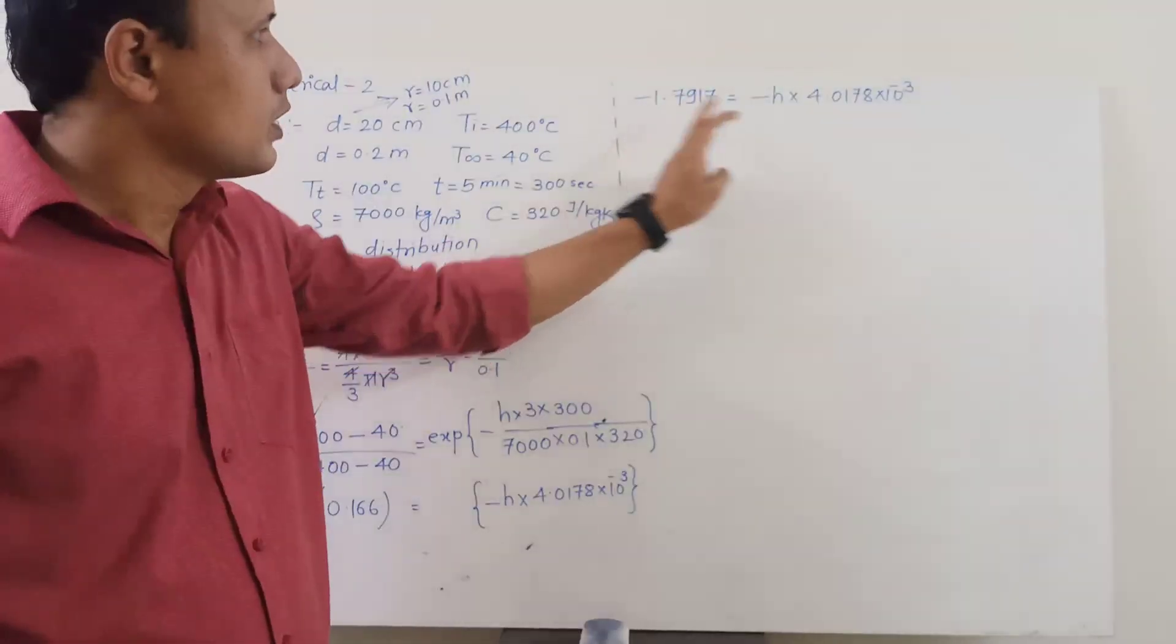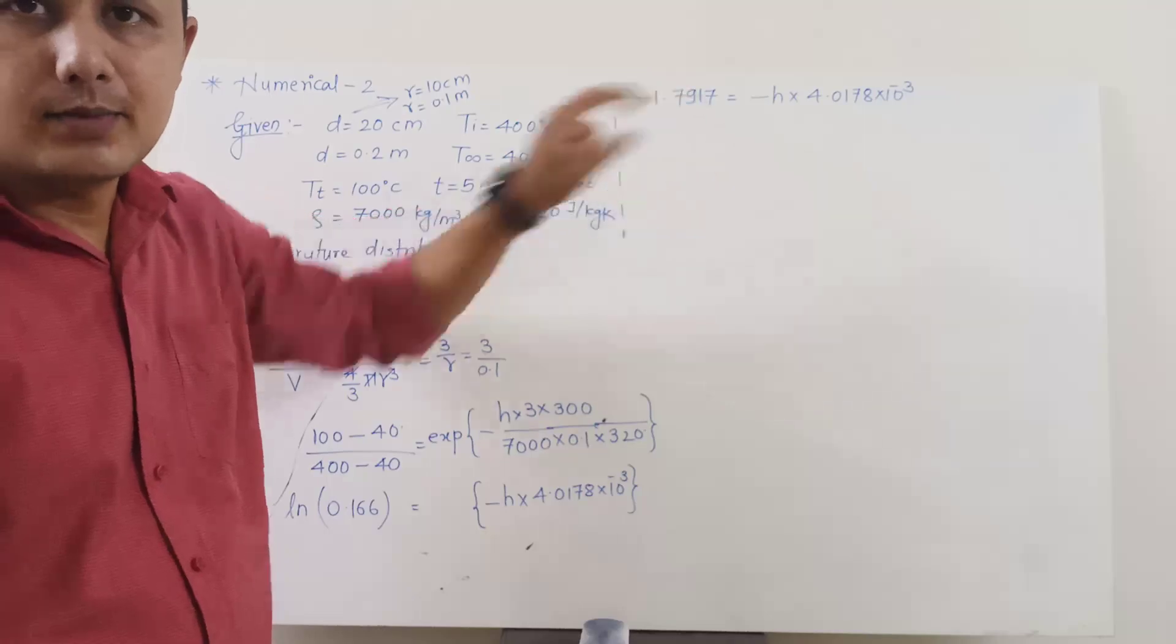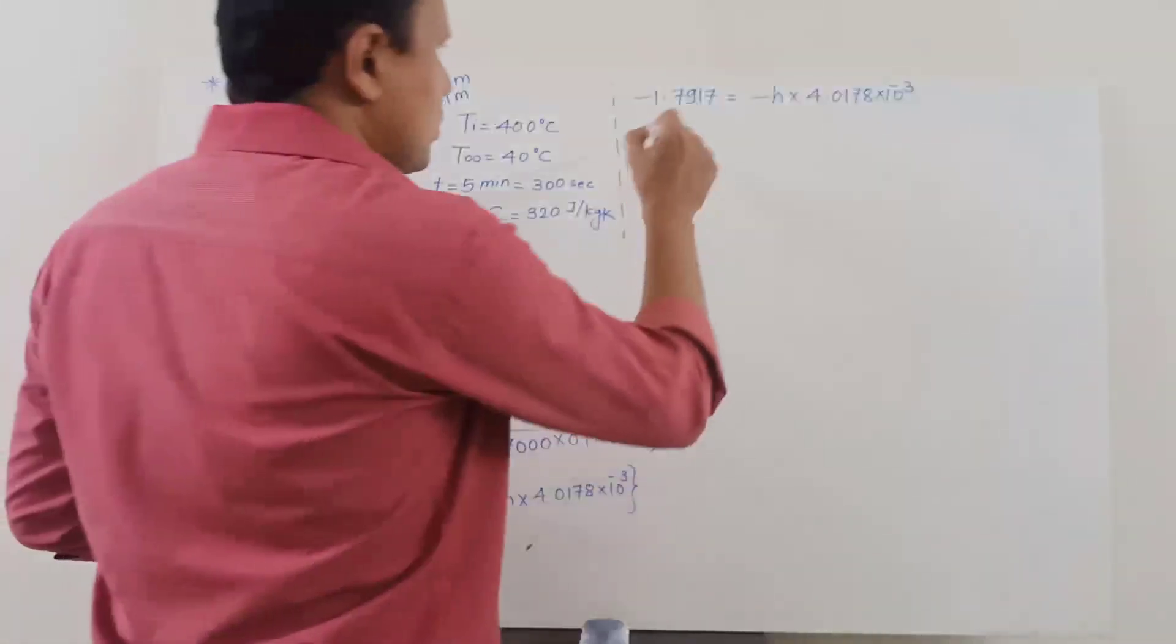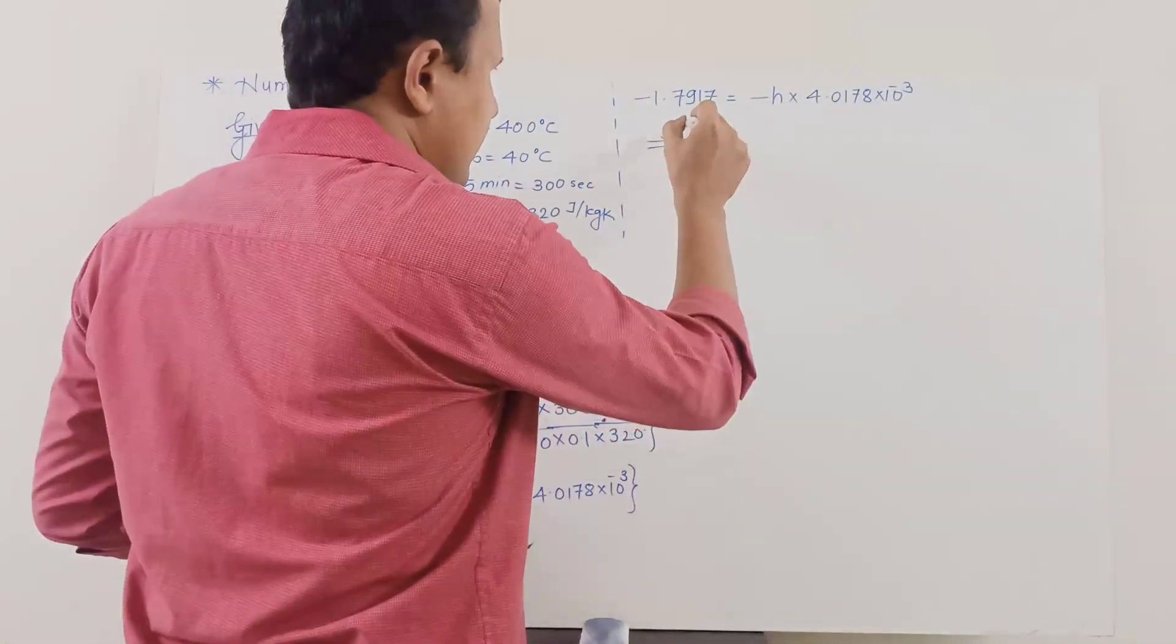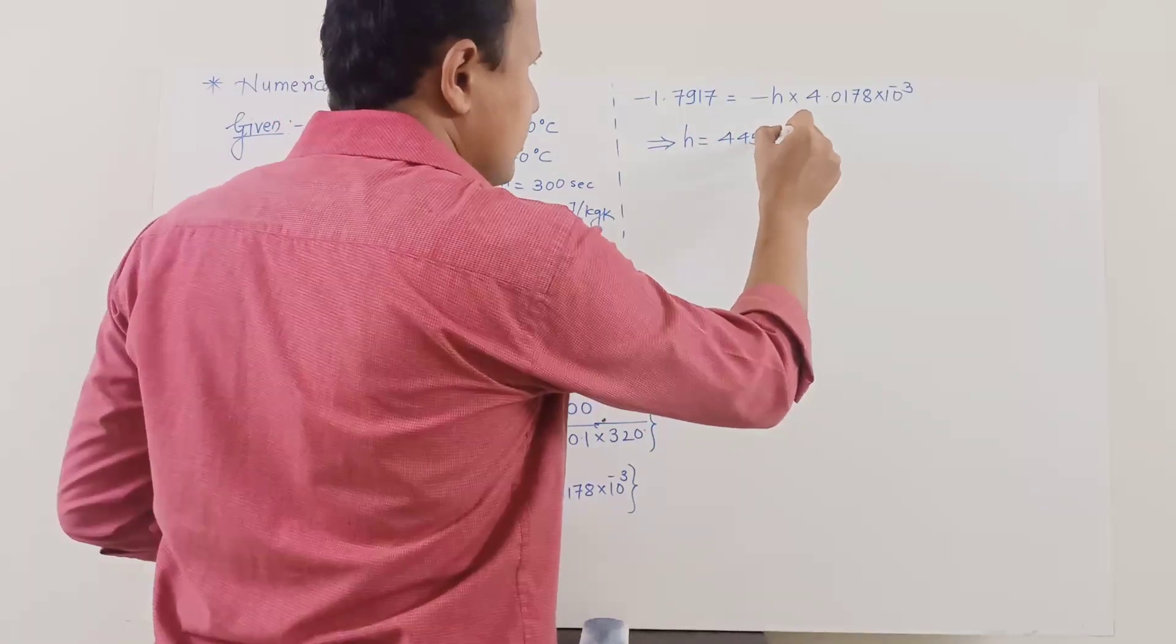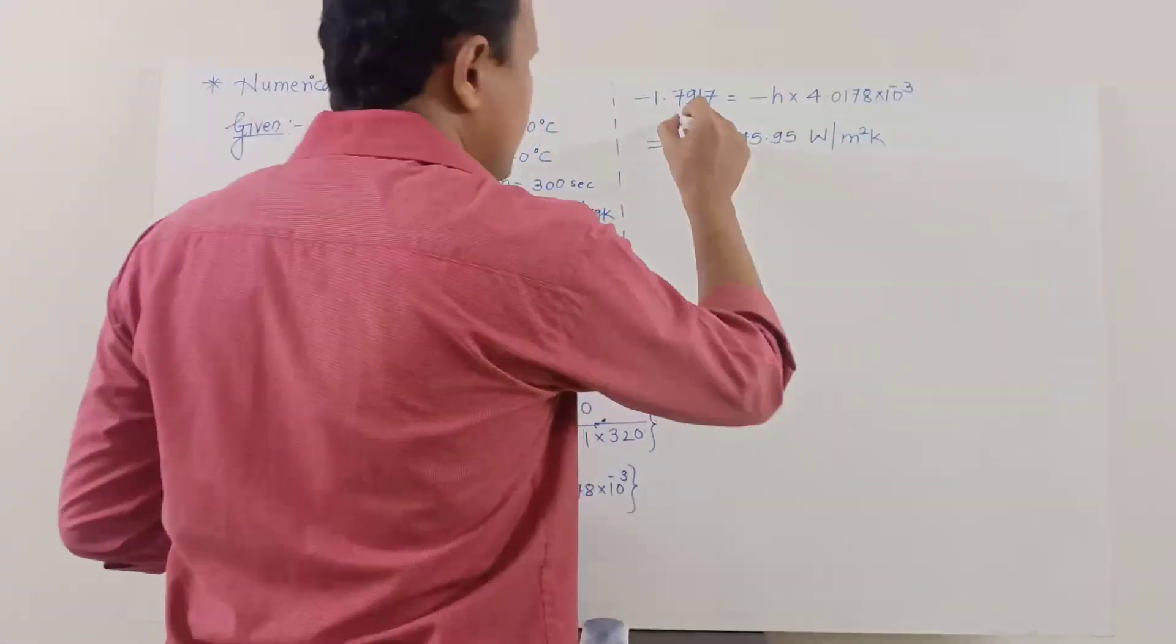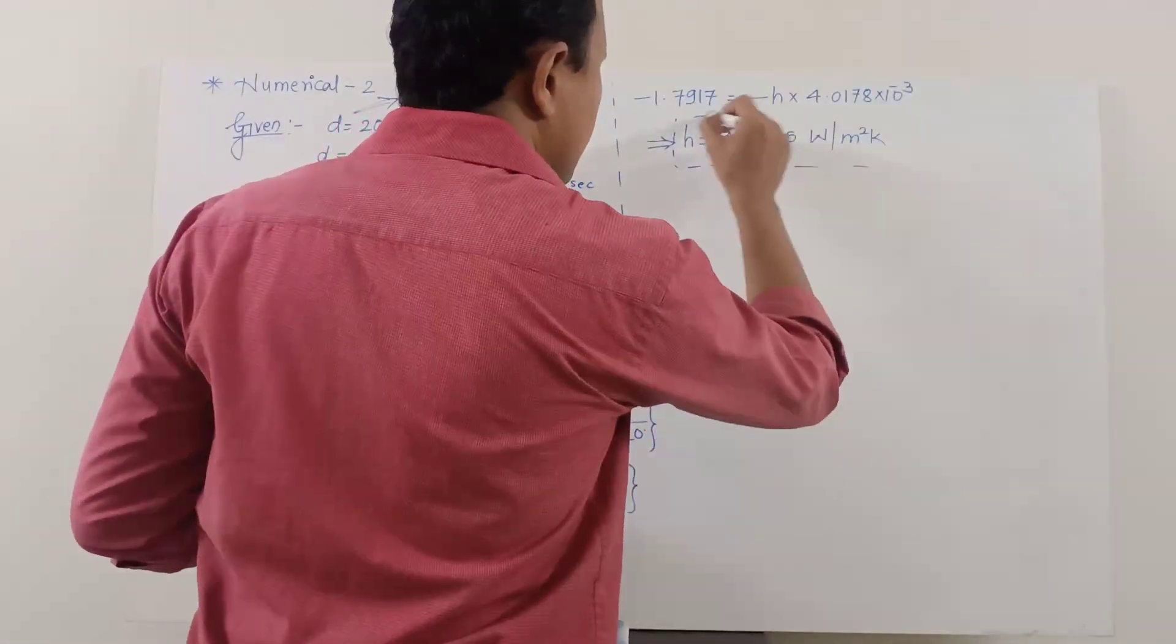Now you will see that this negative and this negative, they will cancel each other. h will be on one side, this entire parameter can divide 1.7917, so because of that the value of h that you will get will be 445.95 Watt per meter square Kelvin, that's your final answer.